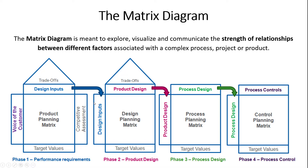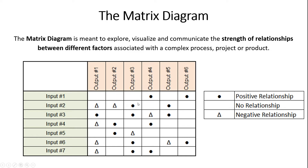The house of quality is a cascading event. Once you've done a matrix diagram comparing customer needs against design inputs, you can do another showing the relationship between design inputs and design outputs, which can flow all the way down into your process and the way you control it. For example, design output C here has a negative relationship with multiple design inputs, so we need to understand that as we make design tradeoffs and really optimize our design.